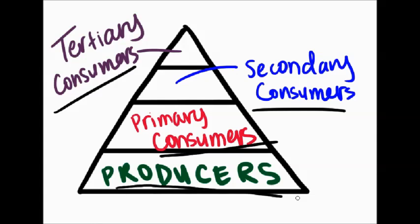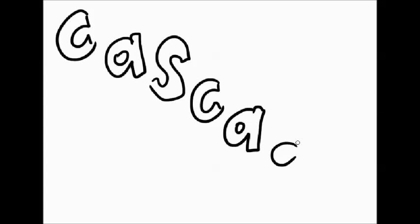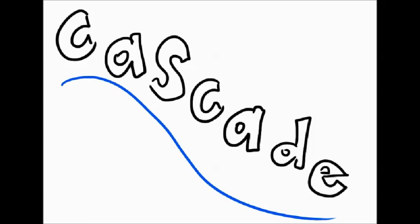Now for the cascade part. The word cascade refers to the fact that if one were to manipulate either the top or bottom trophic level, the effects will echo or cascade throughout the rest of the food chain, hence the cascade.